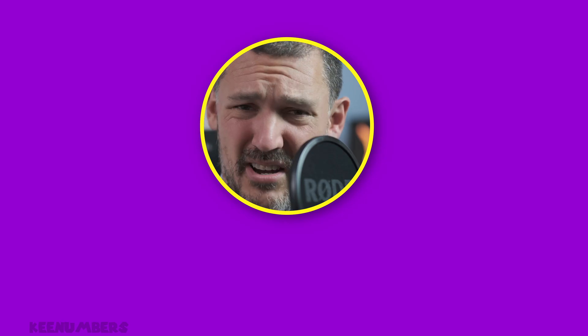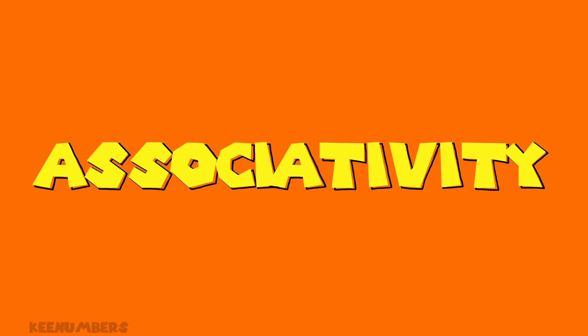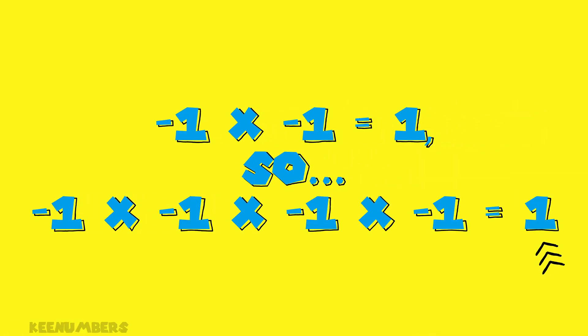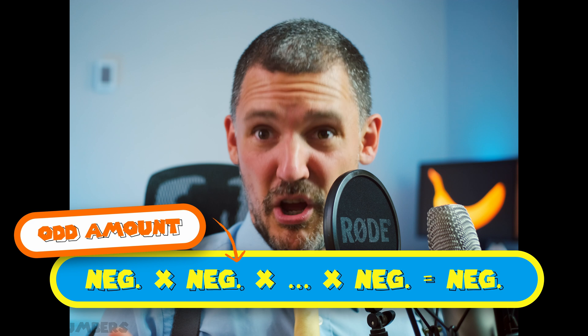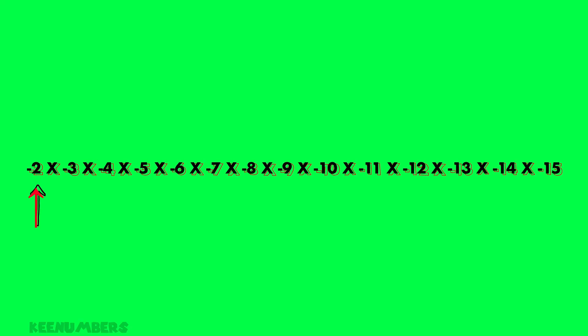What about negative 1 times negative 1 times negative 1 times negative 1 times negative 1? Multiplication is associative. Negative 1 times negative 1 is positive 1, so you're just dealing with 1 times 1 — good old-fashioned 1. If you're multiplying an odd number of negative numbers, it'll ultimately be negative.